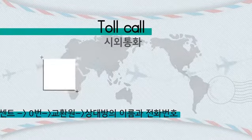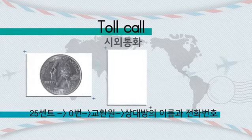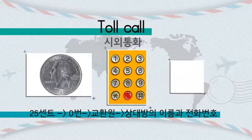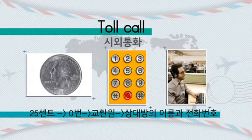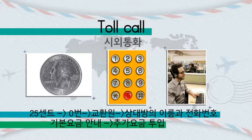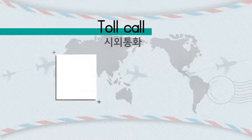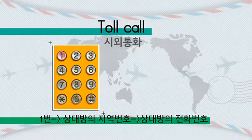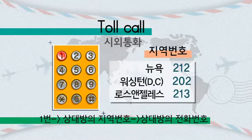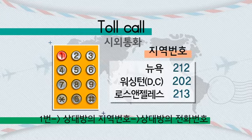객실 교환원을 이용해서 전화를 하실 때는 내가 어디에 누구에게 전화를 하고 싶다라고 정확하게 말씀하시면 연결해 주실 겁니다! 호텔에서는 수수료를 따로 받는 경우가 있기 때문에 그거 염두하세요! 시외 통화를 할 때는 반드시 25센트를 먼저 넣고 0번을 눌러야 됩니다. 0번을 누르면 교환원이 나오거든요. 그러면 그 교환원에게 상대방 이름과 전화번호를 알려주면 그제서야 기본 요금이 안내됩니다. 기본 요금이 안내되면 추가 요금을 넣어야지만 전화통화를 할 수 있습니다. 교환원이 부끄럽다면 1번을 누르시고 상대방 지역번호와 전화번호를 눌러서 진행하시면 됩니다.